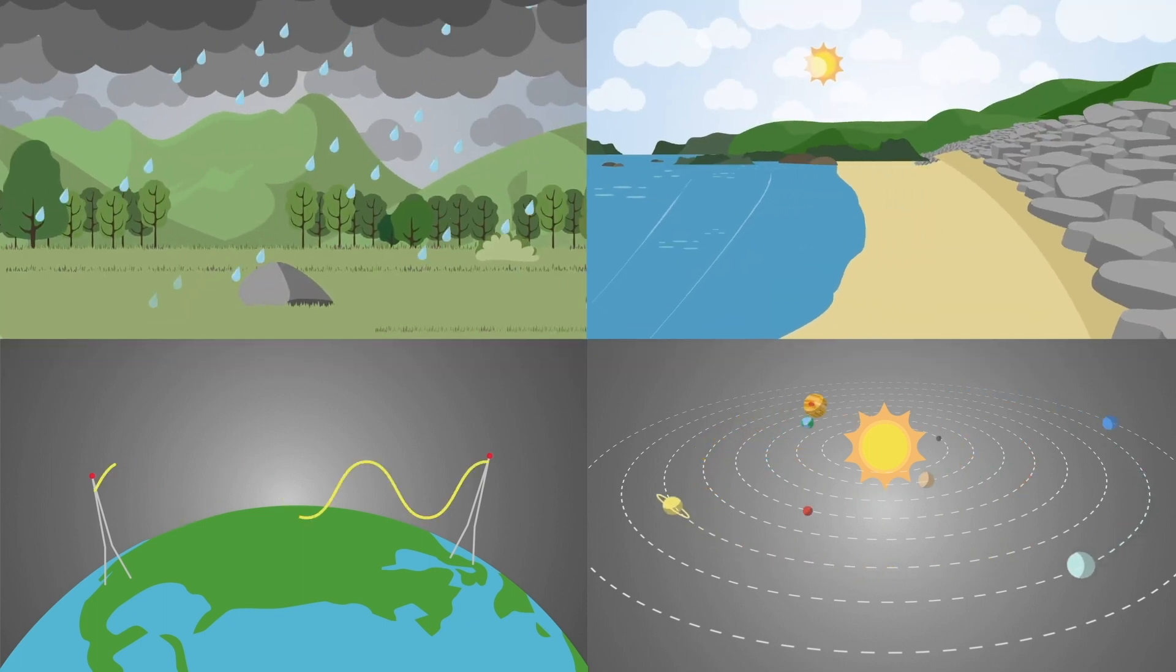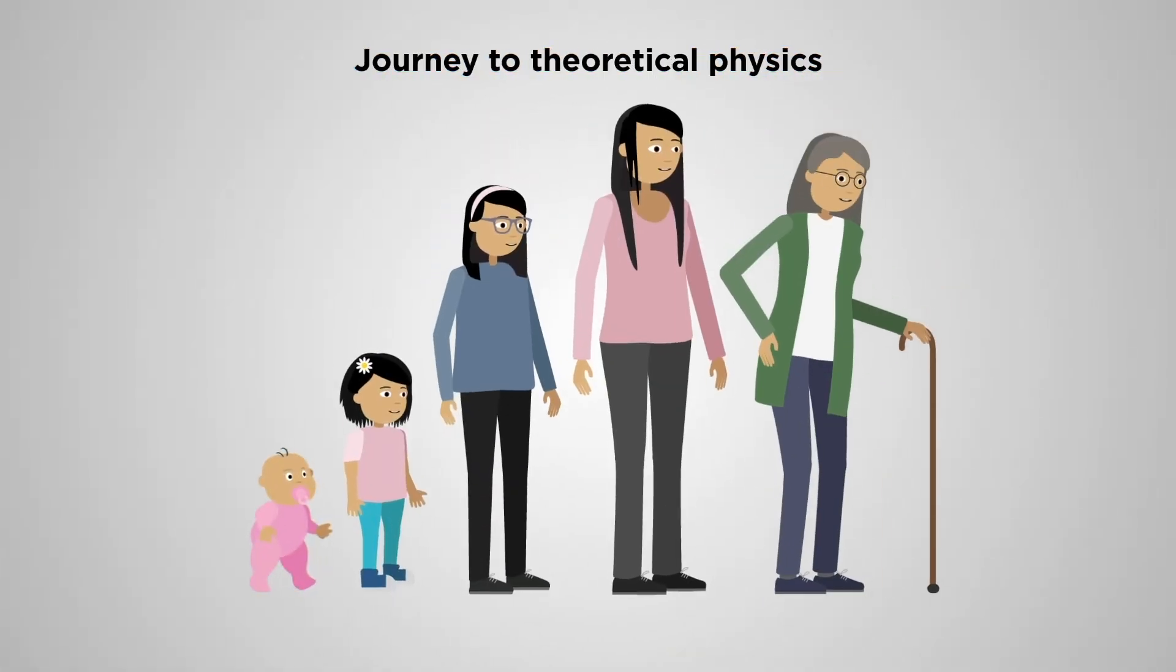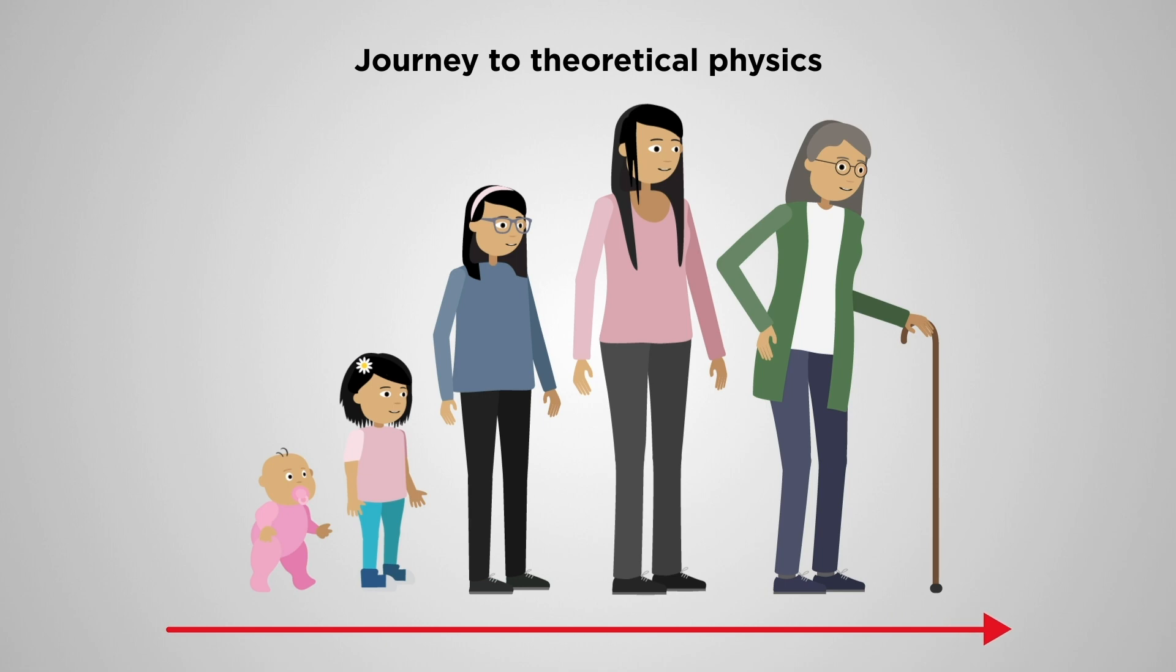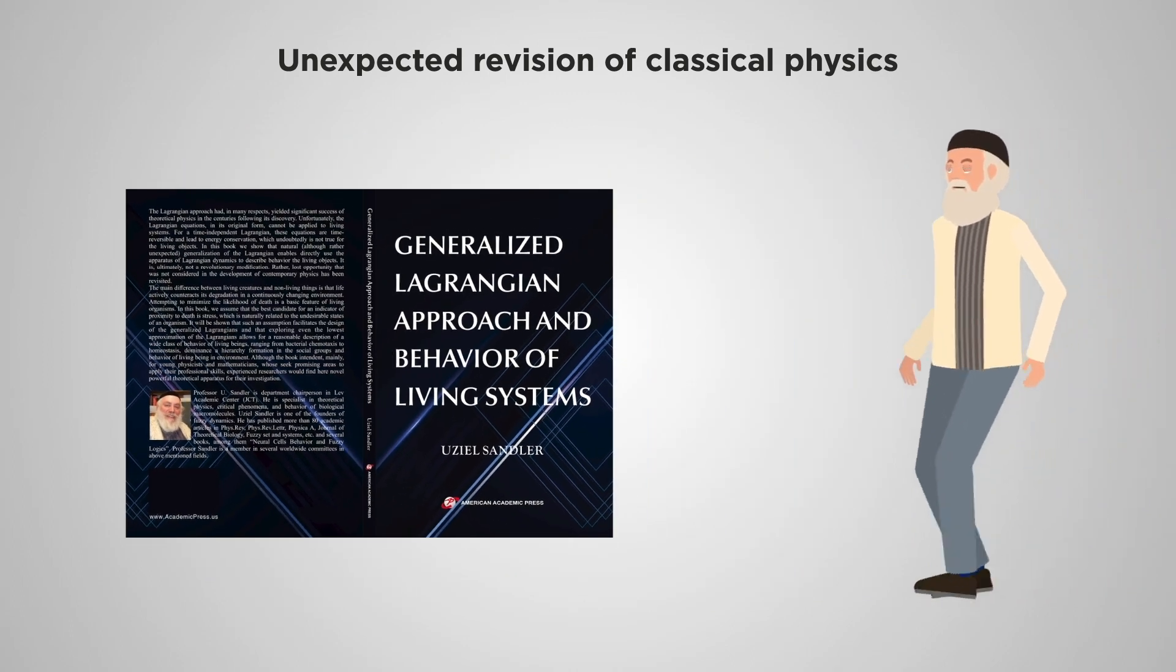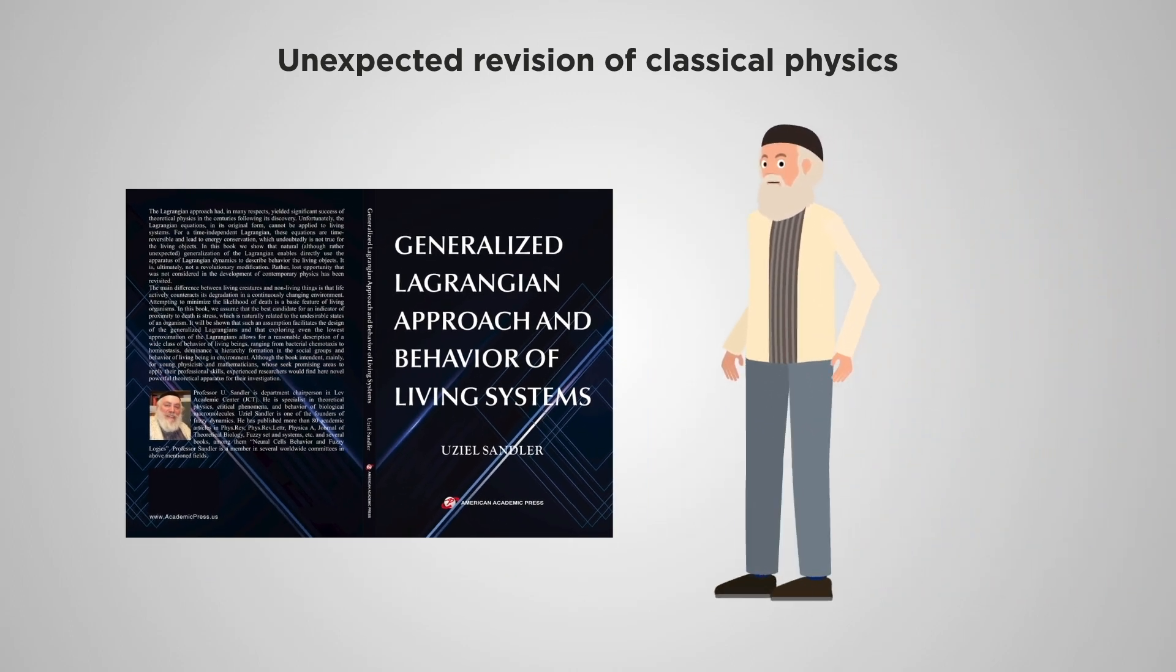Until recently, it's been accepted that classical physics can only describe non-living physical systems. Another approach would be required to describe living beings. In his recent book, Professor Utzil Sandler demonstrates how physics can, in fact, describe living objects. All it needed was a modification.